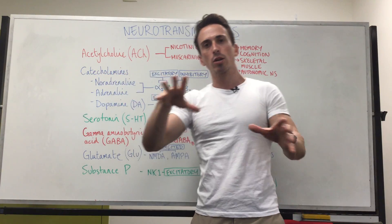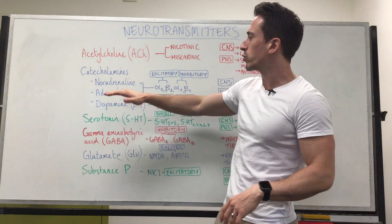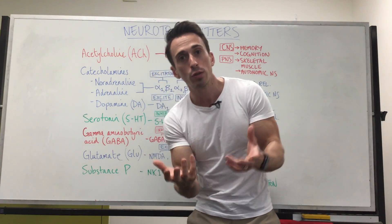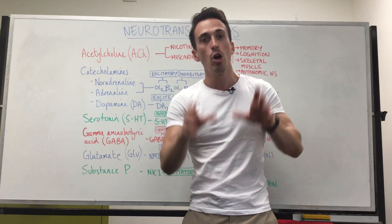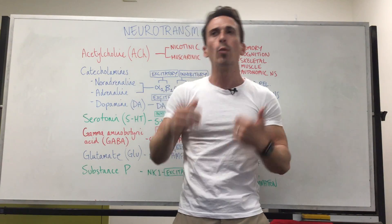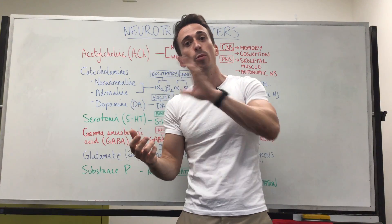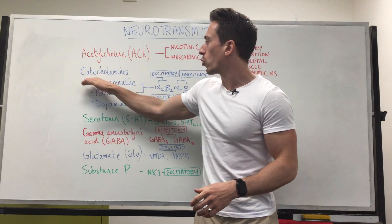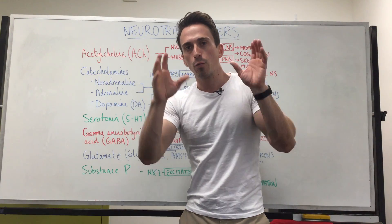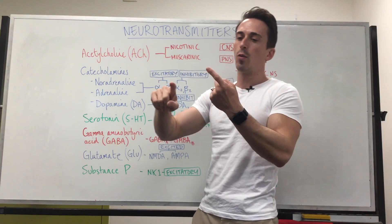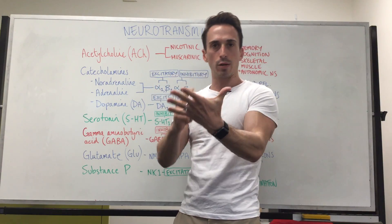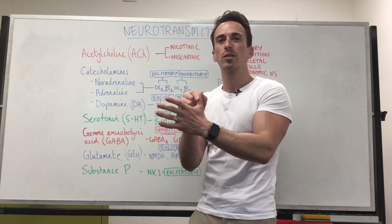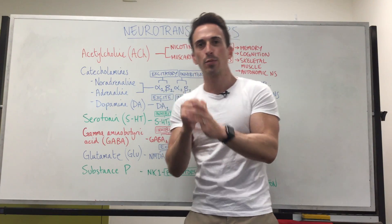Now let's look at the catecholamines. Catecholamines is an umbrella term for noradrenaline, adrenaline, and dopamine. All three neurotransmitters are produced from the amino acid tyrosine, which we must get from our diet — we can also produce it from phenylalanine, but we need to get phenylalanine from our diet as well. For noradrenaline and adrenaline, there are several different receptors: alpha 1, alpha 2, beta 1, beta 2, and beta 3. We can ignore beta 3 because they're only found on fat cells and there are no drugs that really utilize this receptor.